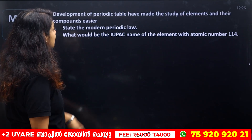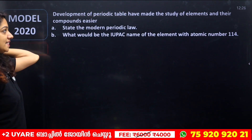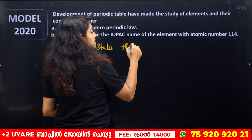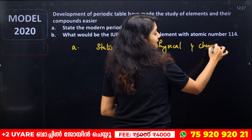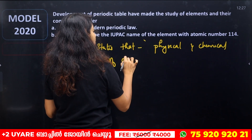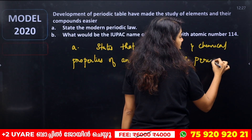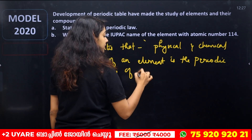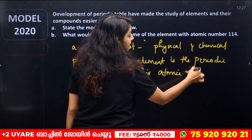Next question: the development of the periodic table has made the study of elements and their compounds easier. State the Modern Periodic Law. It states that the physical and chemical properties of an element are periodic functions of their atomic numbers.